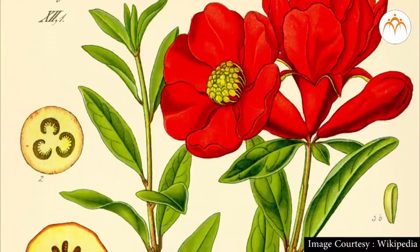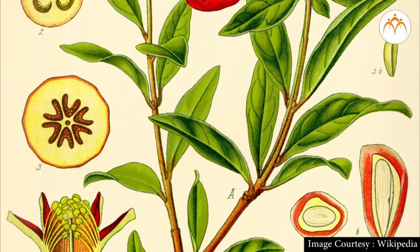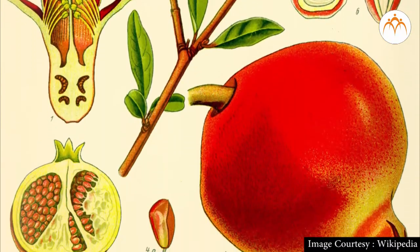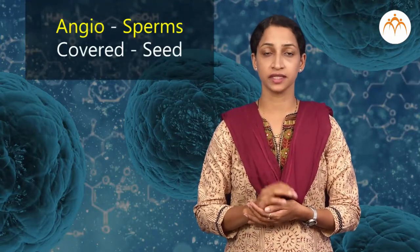Let's look at the most familiar group: angiosperms. You can prepare a long list of angiosperms for sure. Angiosperms are seed-bearing plants where flowers bear the reproductive organs, which develop into fruits, and seeds are formed within the fruits. So these are covered seeds — 'angio' means covered and 'sperm' means seed.